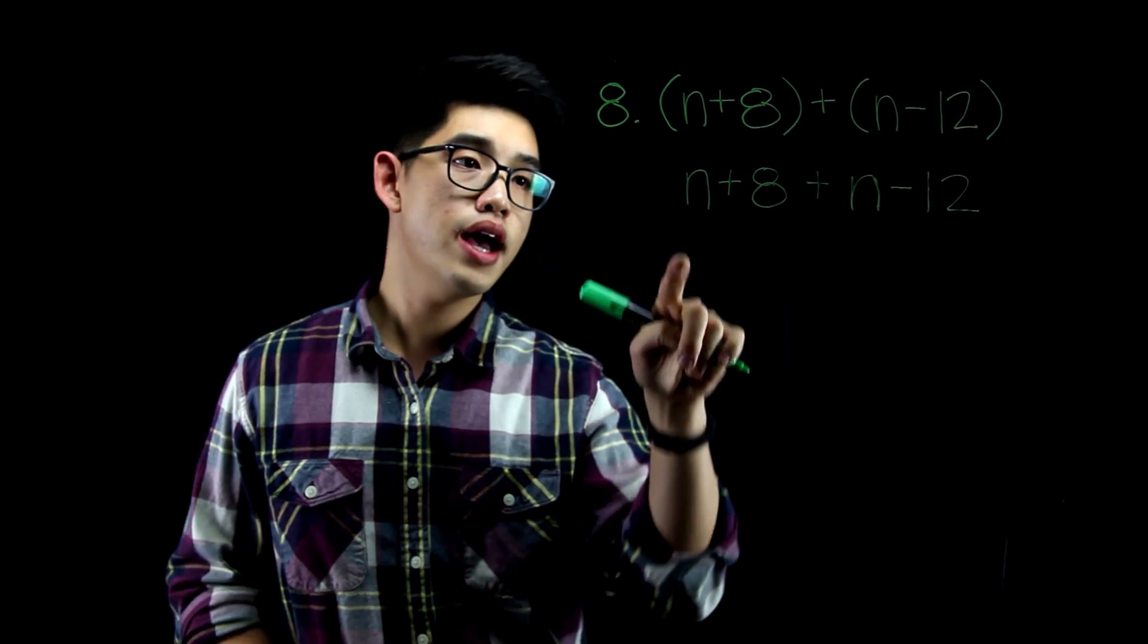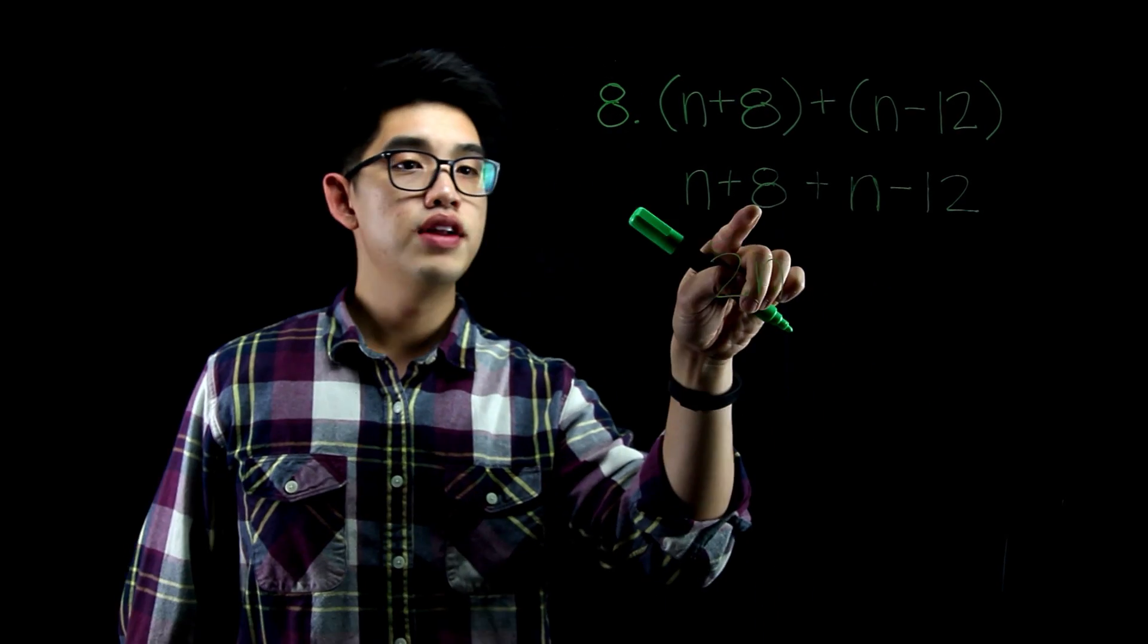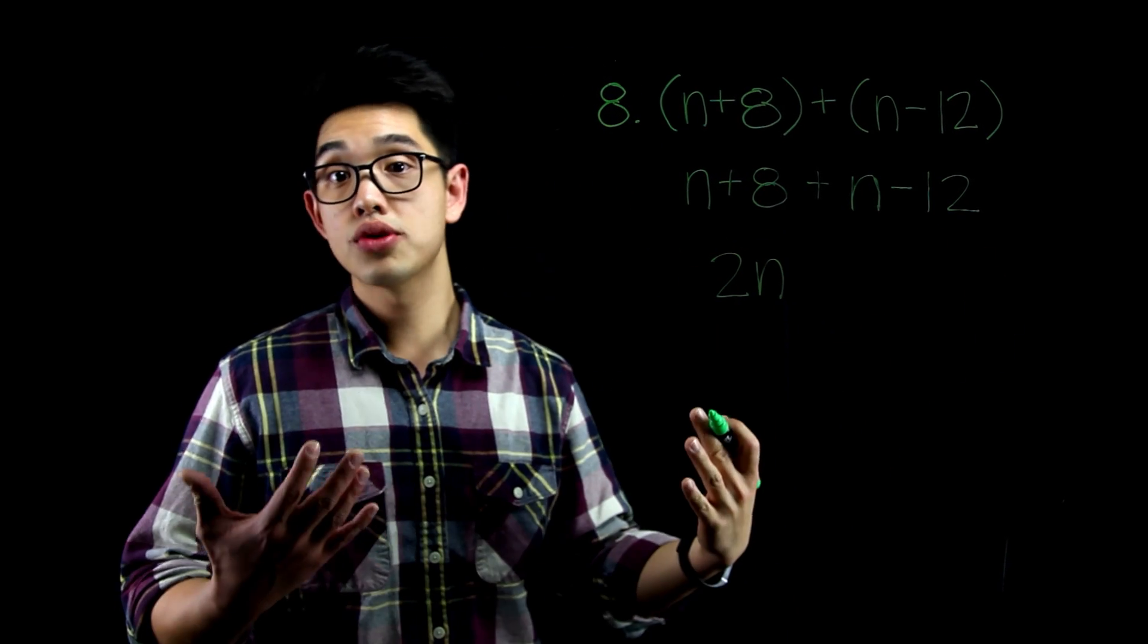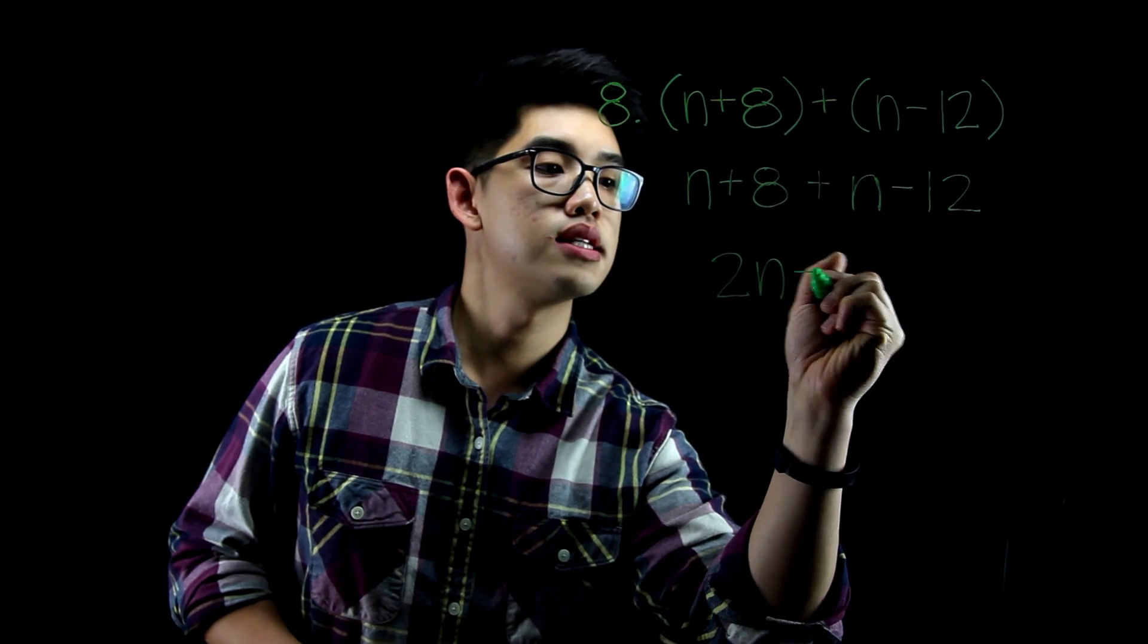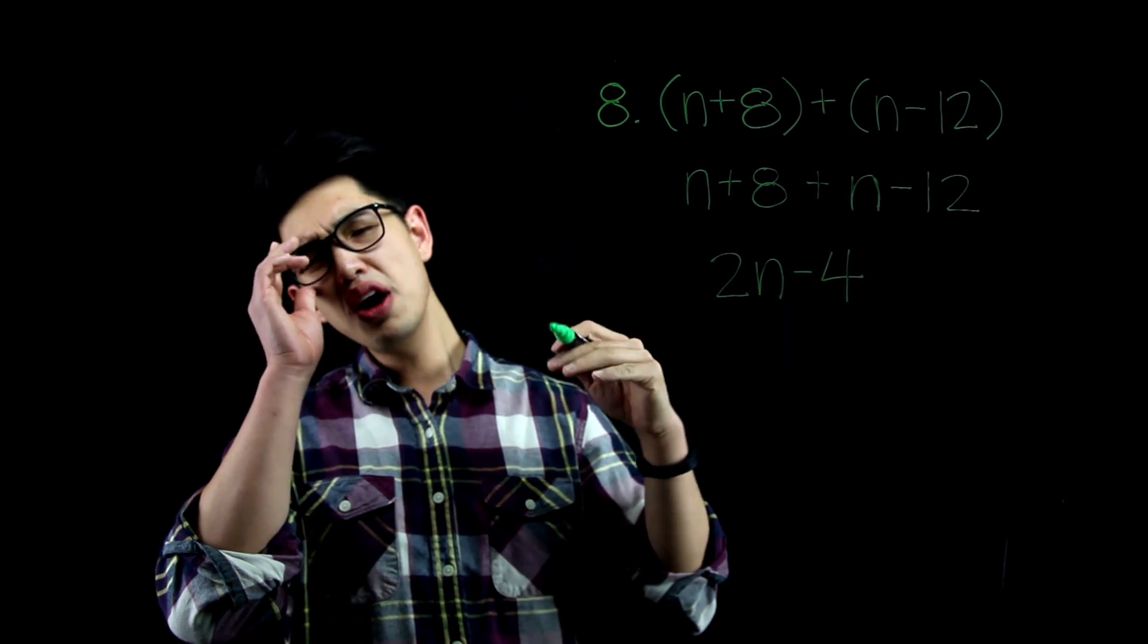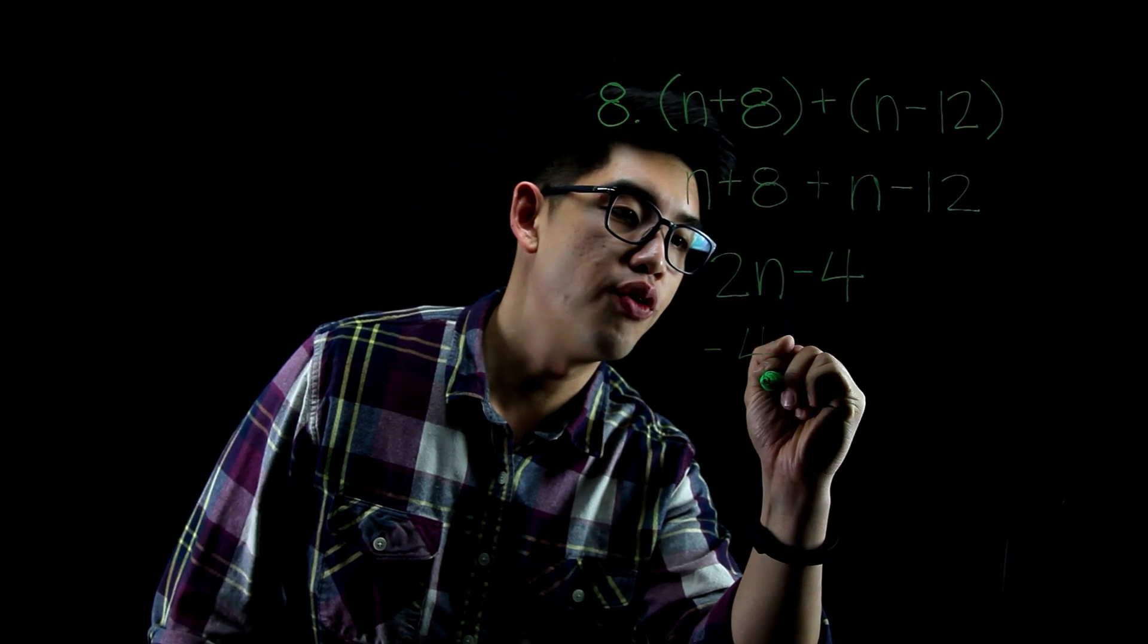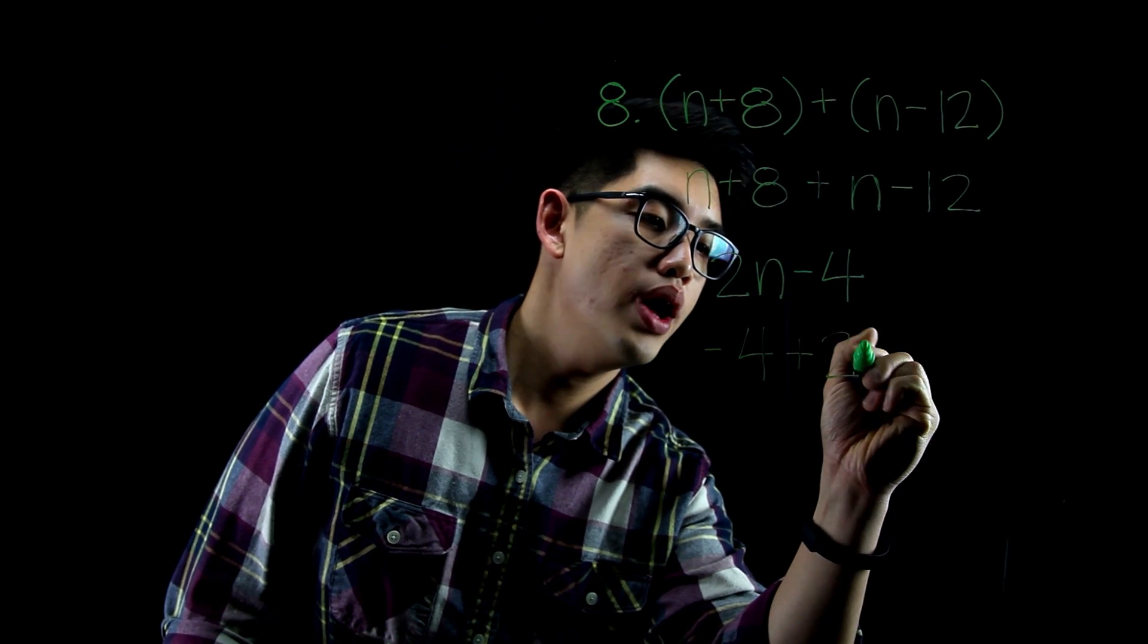Now we can combine like terms. I have an n there. I have an n there. I have 2n. And then I have an 8 minus 12. Our answer is going to be negative. That's going to be negative 4. So my answer is 2n minus 4. Or if you want to be that guy, you can write negative 4 plus 2n. Yes, that's the same thing because of the commutative property.